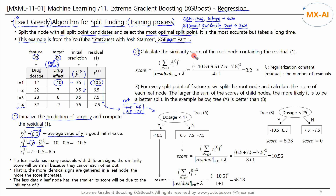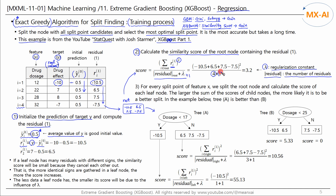Step 2 calculates the similarity score for the root node. The formula for calculating the score: the numerator is the square of the sum of the residuals, and the denominator is the number of residuals belonging to this node plus lambda, a regularization constant and hyperparameter. The number of residuals in the root node is 4 and lambda is set to 1, so the similarity score of the root node is 3.2. The reason for calculating the score this way will be discussed in detail in the next video.